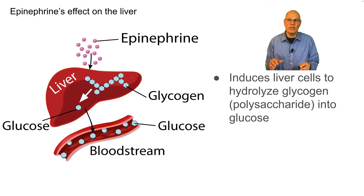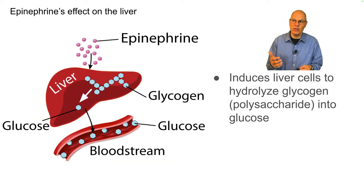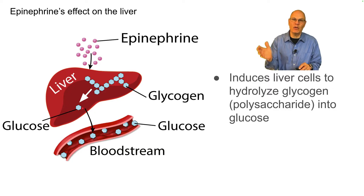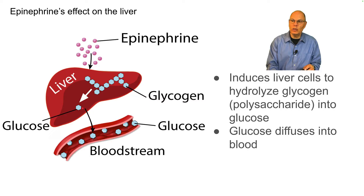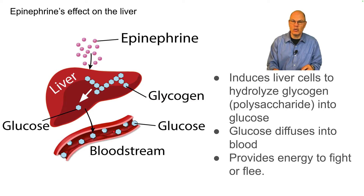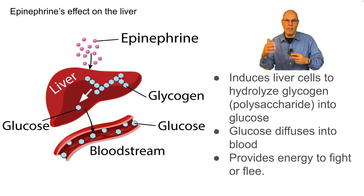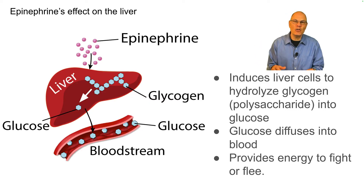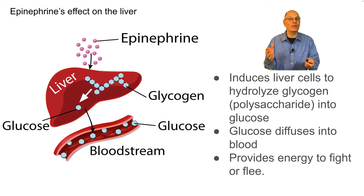Epinephrine interacts with cells in the liver and induces changes that cause those liver cells to take stored glycogen — a polysaccharide — and hydrolyze it into the monomers of polysaccharide, glucose. That glucose then diffuses into the bloodstream, going to the muscles of the body and to other organs as well, providing energy to fight or flee as part of the fight or flight response.